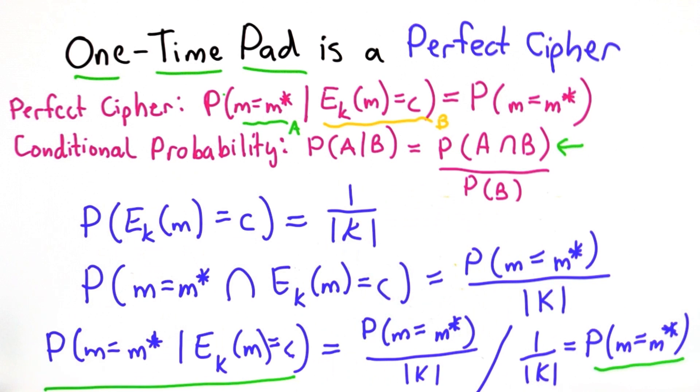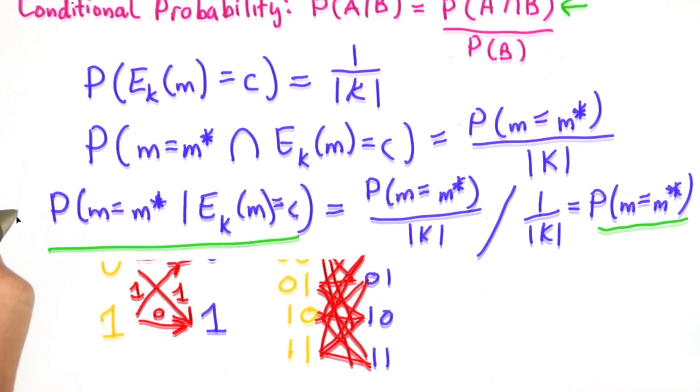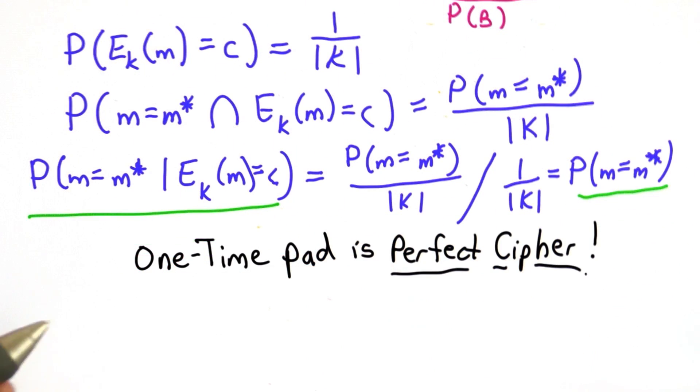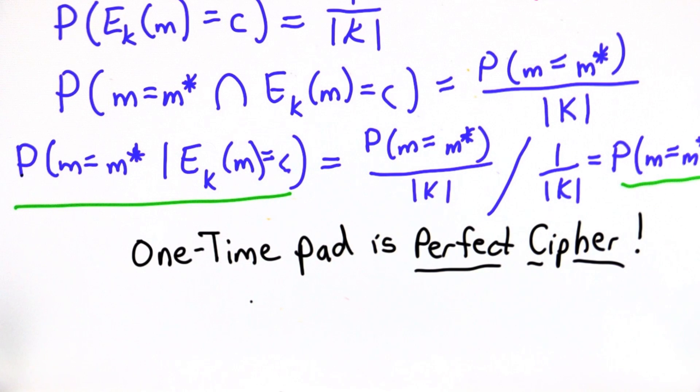And that's exactly our definition of a perfect cipher. So we can conclude that the one-time pad is a perfect cipher. It exactly satisfies the definition of a perfect cipher, where the ciphertext reveals nothing at all about the key. So you might think the class should be over.